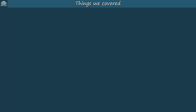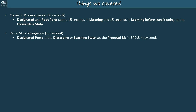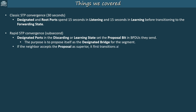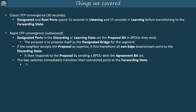Here's what we covered in this video. We reviewed classic STP convergence — designated and root ports spend 15 seconds in listening and 15 seconds in learning before transitioning to the forwarding state, taking a total of 30 seconds. We then covered rapid STP convergence using the sync process: designated ports in the discarding or learning state set the proposal bit in BPDUs to propose themselves as the designated bridge for the segment. If the neighbor accepts, it moves all non-edge downstream ports to discarding to avoid layer 2 loops, then sends a BPDU with the agreement bit set, and both ports immediately transition to forwarding — usually in less than a second. This sync process continues until all ports in the LAN are synced.